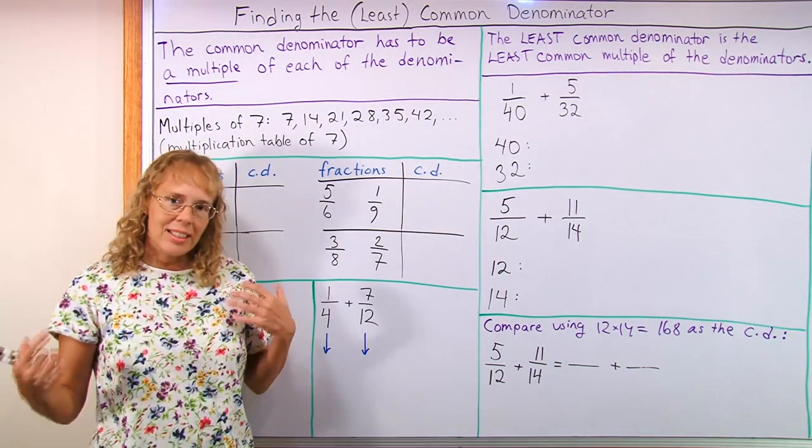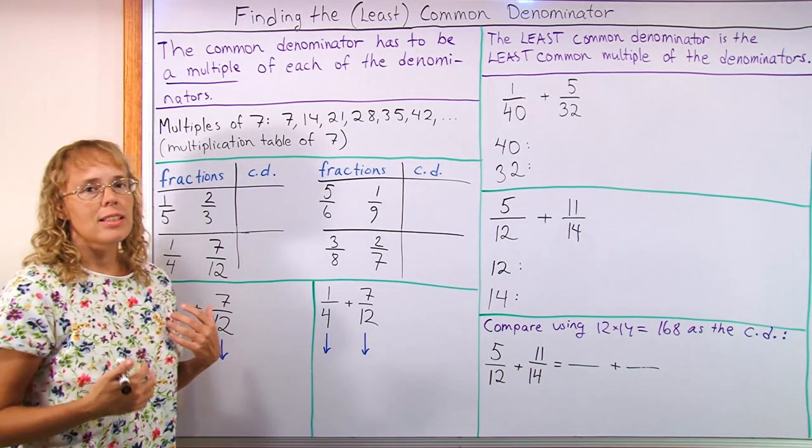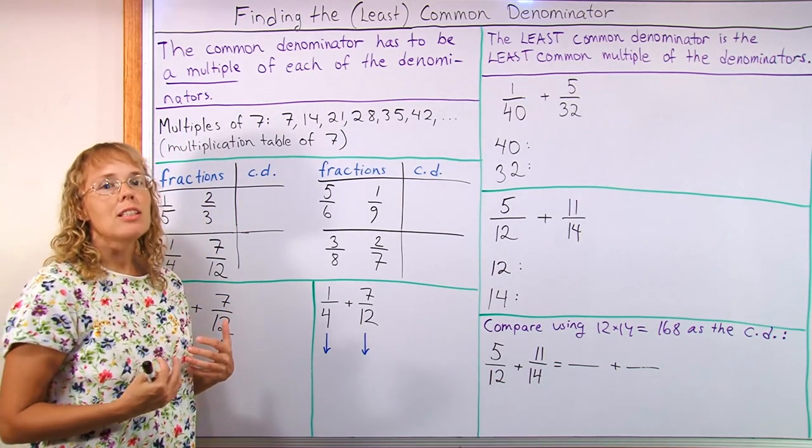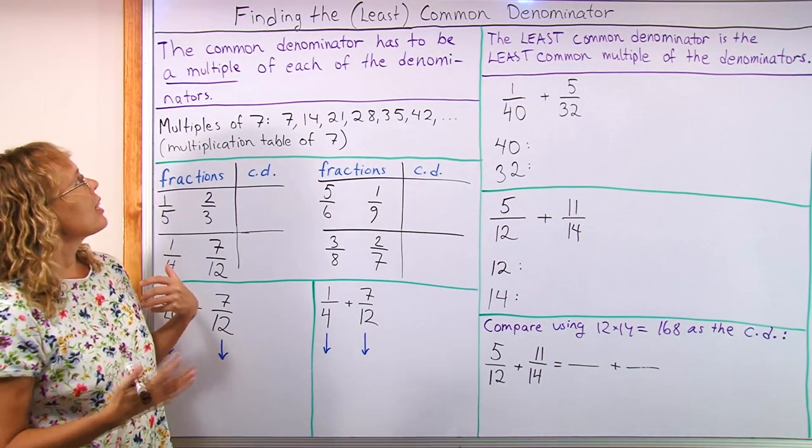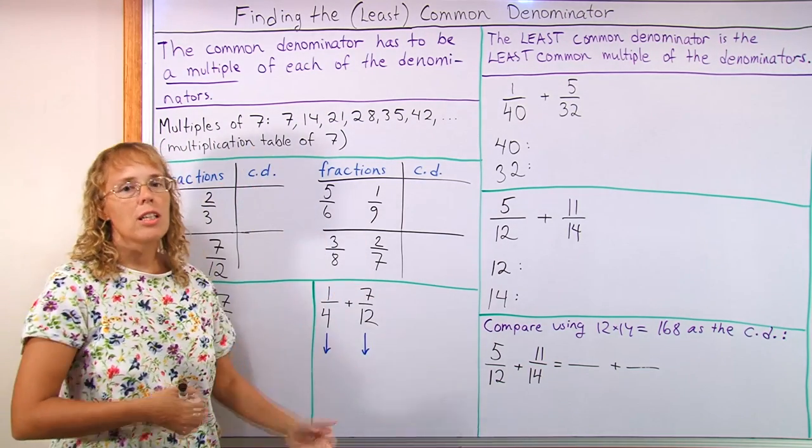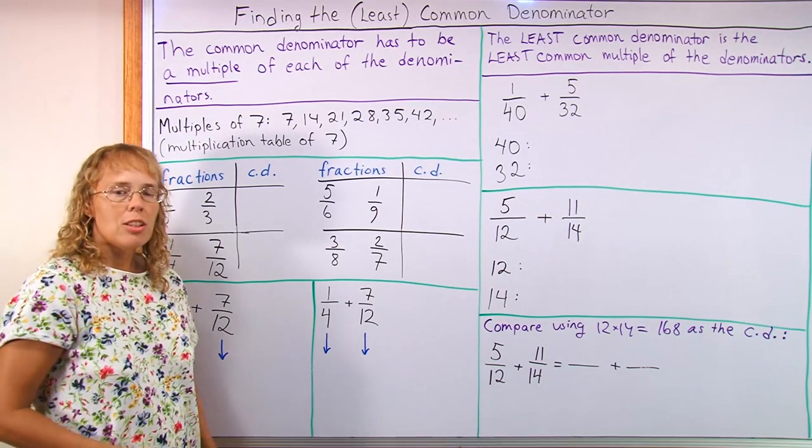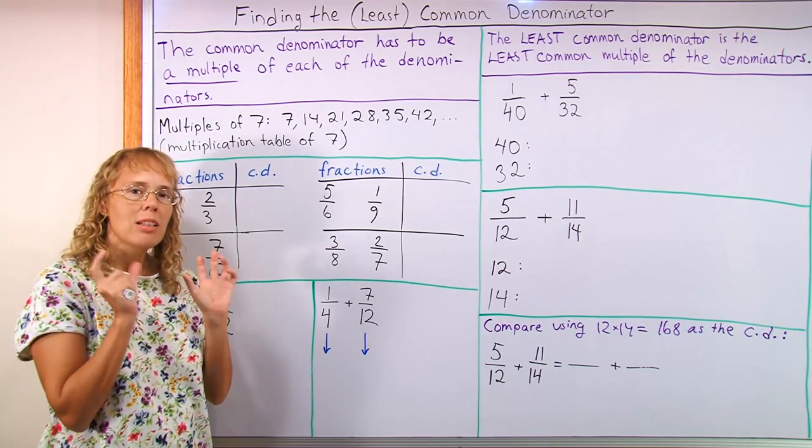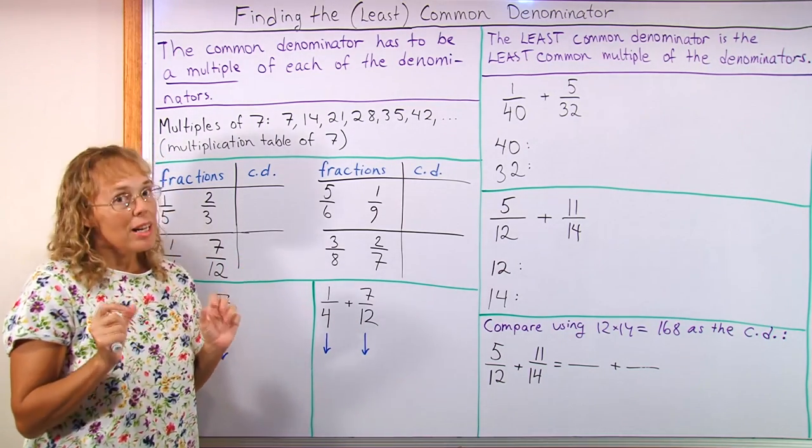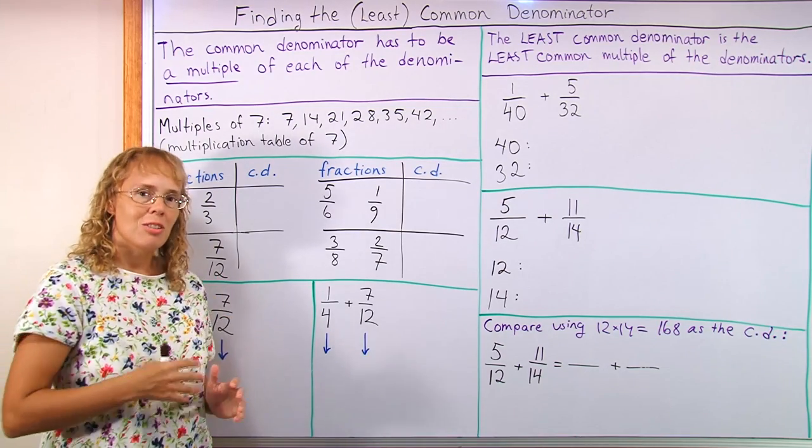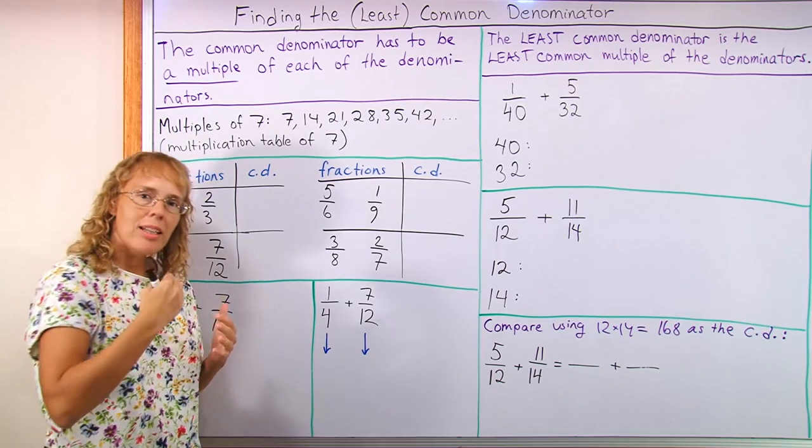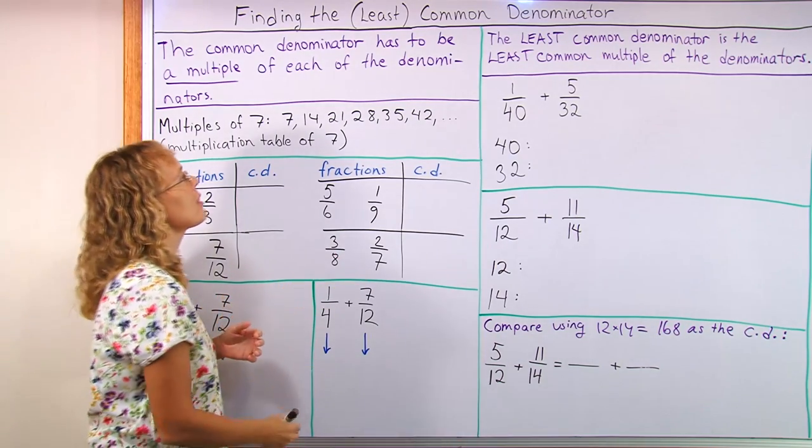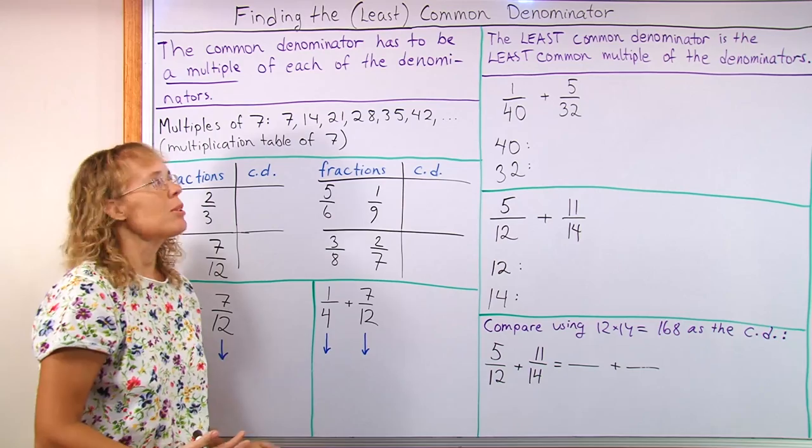The basic idea, the basic principle is that the common denominator when we're adding fractions, we need to find a common denominator and it has to be a multiple of each of the denominators. So this new word, possibly new word, multiple, is what might throw students off and what they need to learn. A multiple of a certain number is where you multiply that number by 1, 2, 3, 4, 5, etc. It's basically the multiplication table of that number.